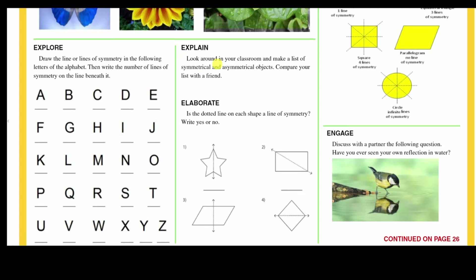Look around in your classroom or at home and make a list of symmetrical and asymmetrical objects, and compare the list with a friend.